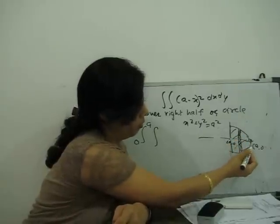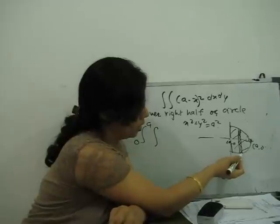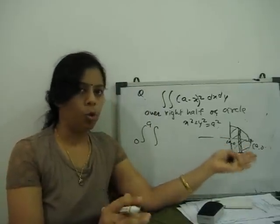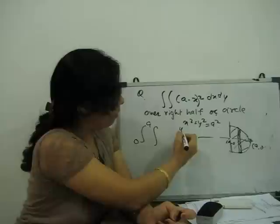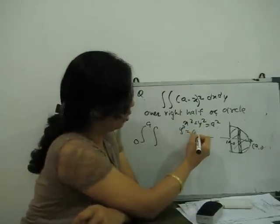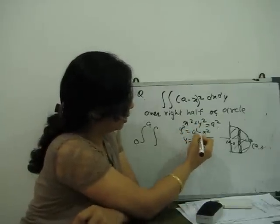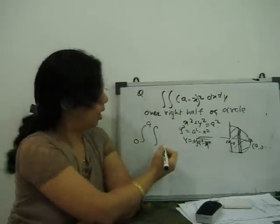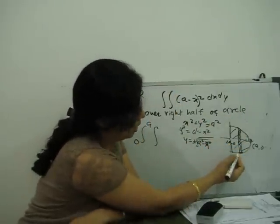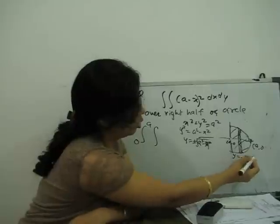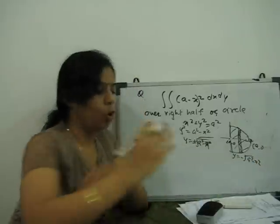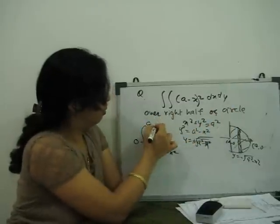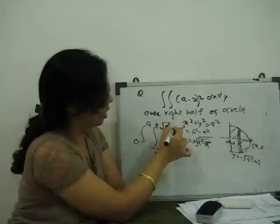This strip from here to here is moving. This is the lower part, this is the upper part. When we check y, y square equals a square minus x square. Means y equals plus or minus under root a square minus x square. So when we go from the lower, this term is y equals minus under root a square minus x square. So the lower limit is minus under root a square minus x square. The upper limit is plus under root a square minus x square.